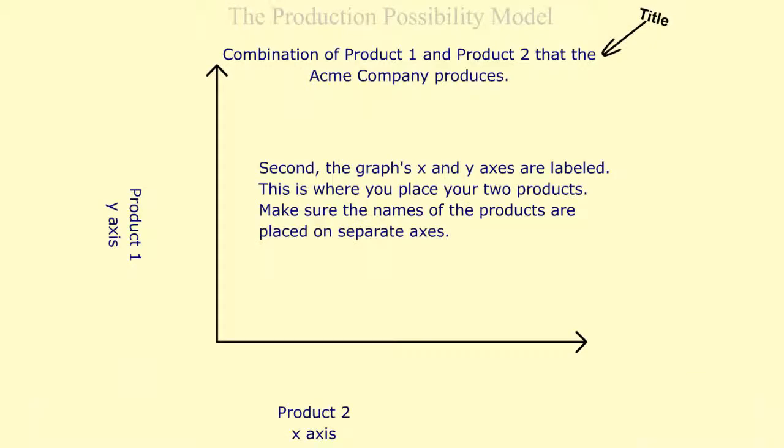Second, the graph's X and Y axes are labeled. This is where you place your two products. Next, make sure the names of the products are placed on separate axes.